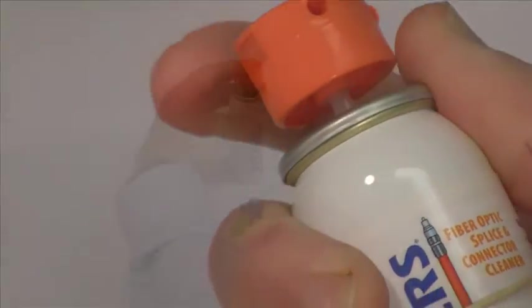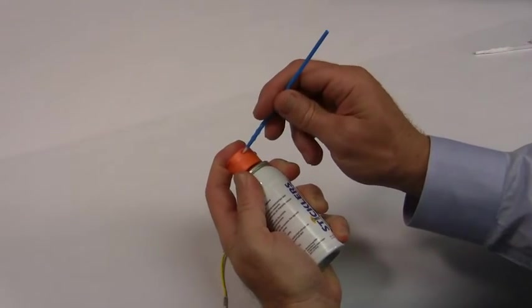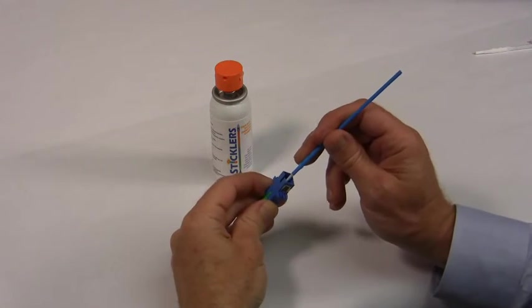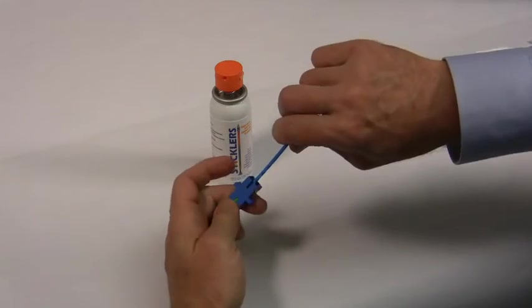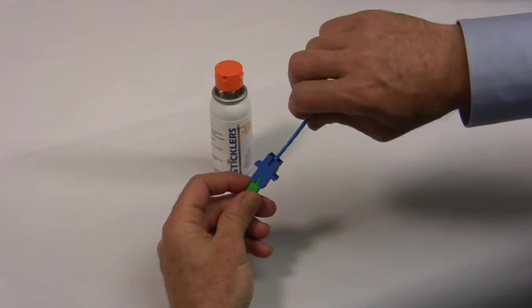Use moderate downward pressure. The stick's fibrous cleaning tip conforms to the geometry of the termini end-face. Each cleaning tip has thousands of ultra-strong fibers that flare out on contact with the end-face, trapping contamination. The fibers close up when pulled away, carrying contamination with the cleaning tip.